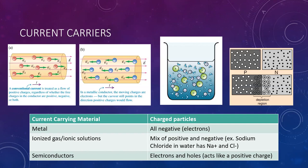Now let's discuss what carries current. We have different current-carrying materials. First, metals, which carry negatively charged particles — electrons. Then we have ionized gas or ionic solutions, which have a mix of positive and negative charges. For example, sodium chloride in water produces sodium cations and chloride anions. Lastly, we have semiconductors, which have electrons and another charge carrier called a hole, which I'll explain shortly.